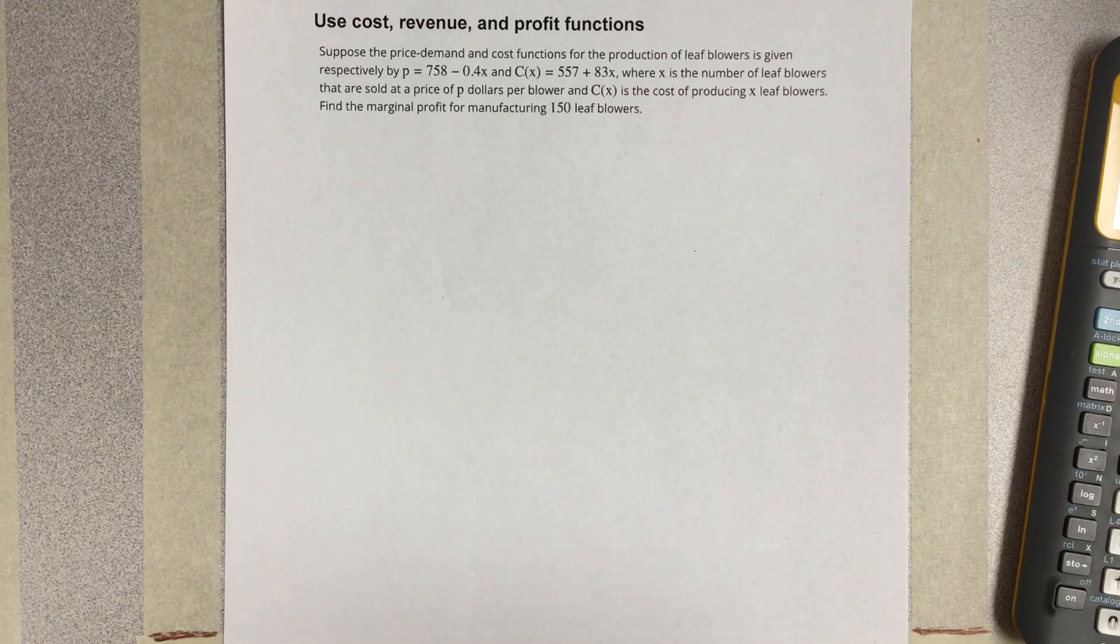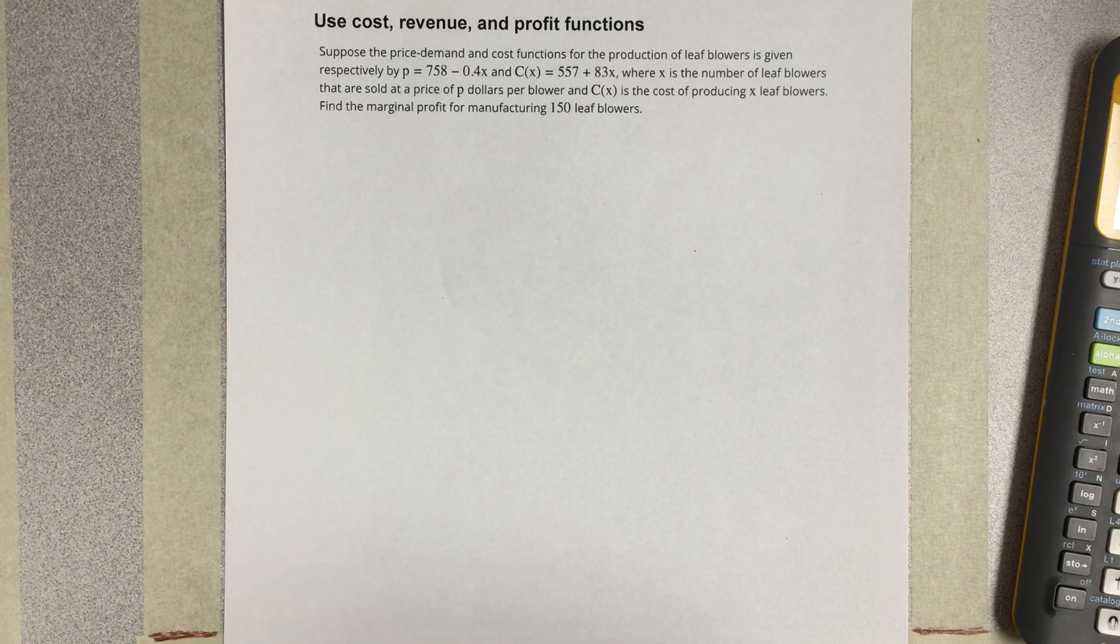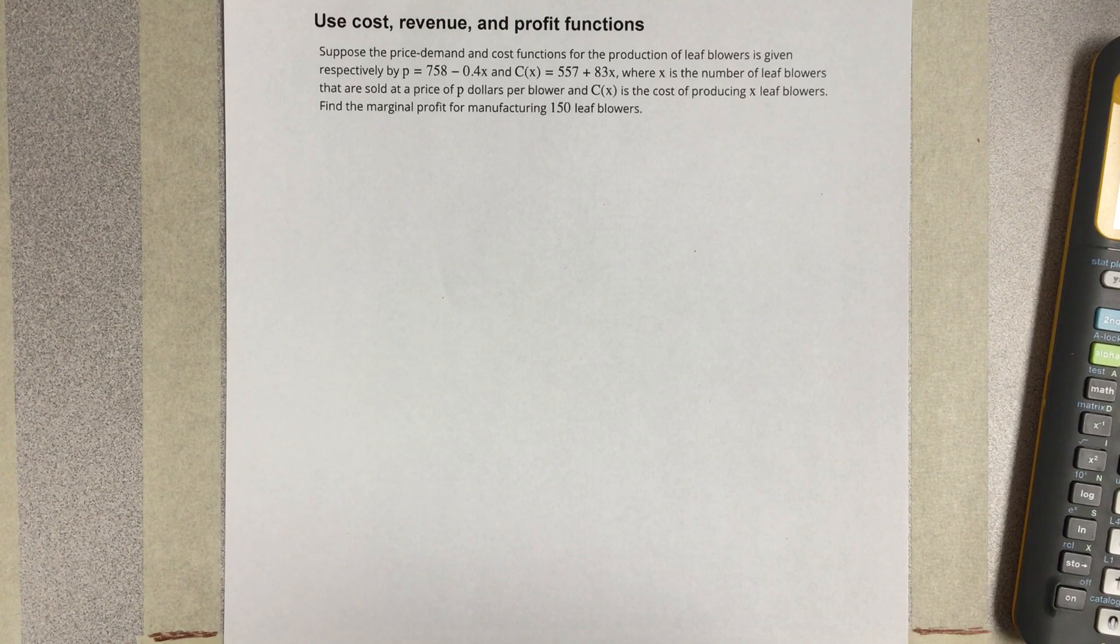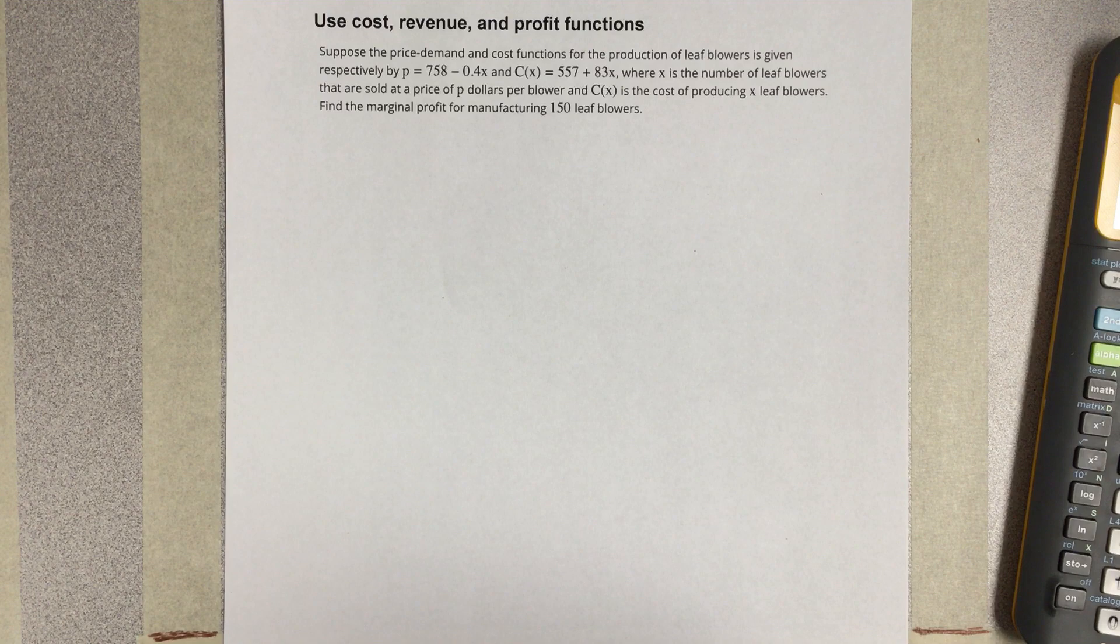In this video, we're going to use cost, revenue, and profit functions. Suppose the price demand and cost functions for the production of leaf blowers is given respectively by P equals 758 minus 0.4x, and C of x is equal to 557 plus 83x.